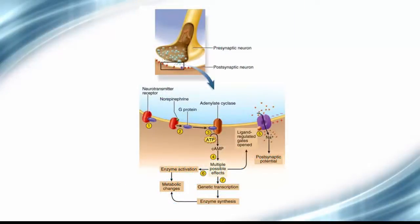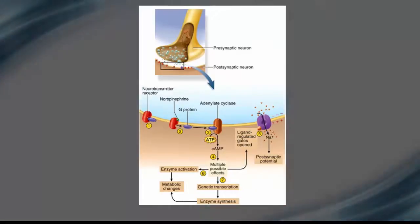Depending on the postsynaptic target cell, we could see changes in local membrane potentials, or we could see a cascade of chemical reactions within the cell that could cause a myriad of possible effects. Now let's back up a little and look at the events that occur at the neuromuscular junction during an action potential of a motor neuron.